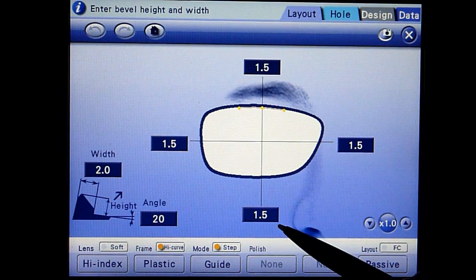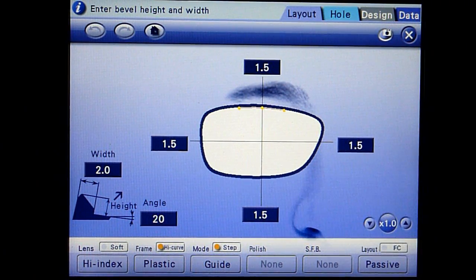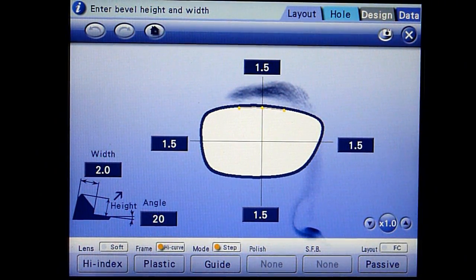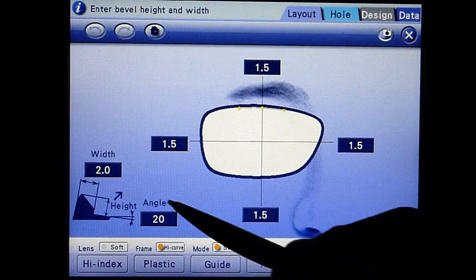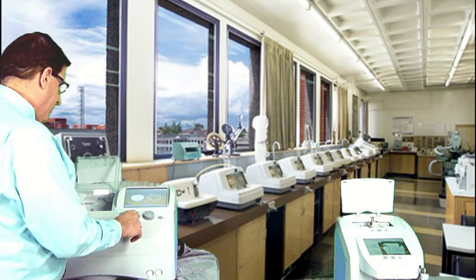The step height of each quadrant can be adjusted independently. Adjust the width to match the thickness of the sample that came with the frame. Start the edging process.